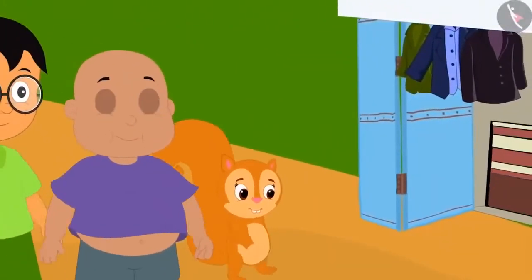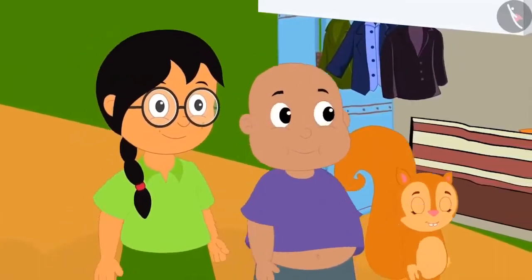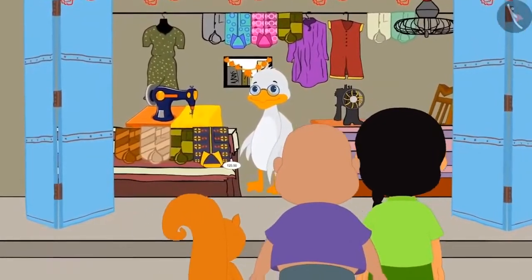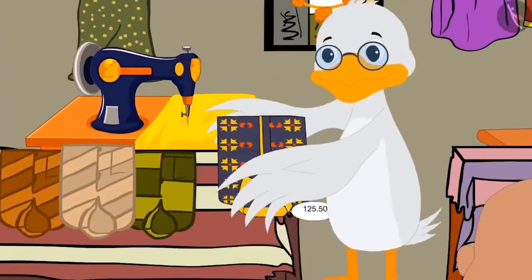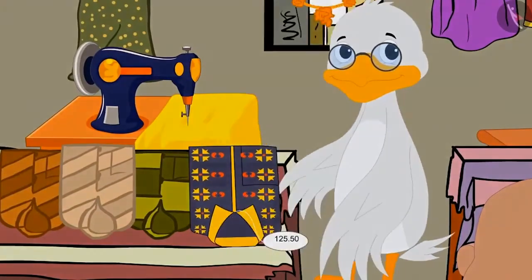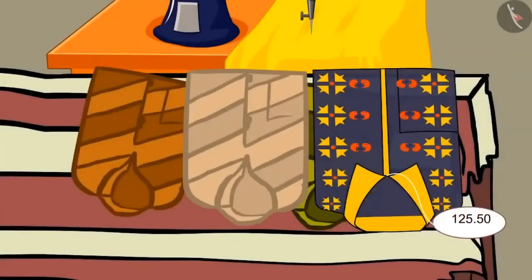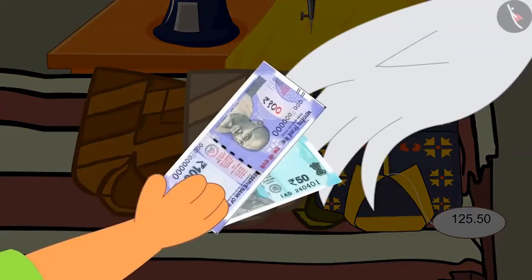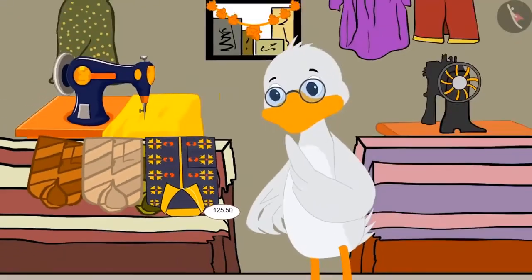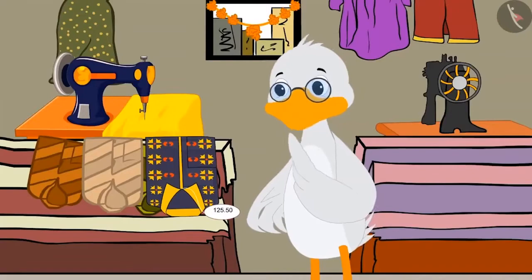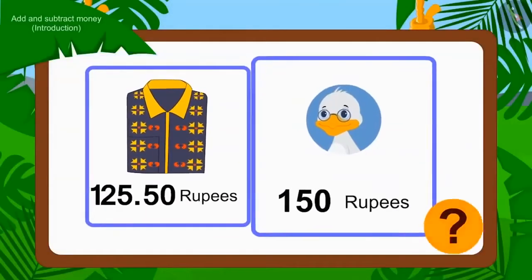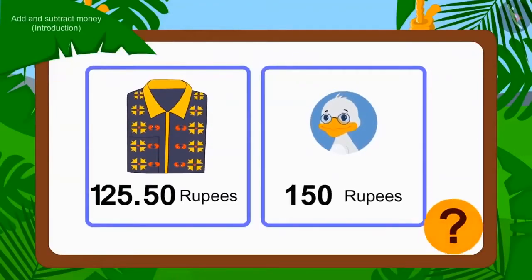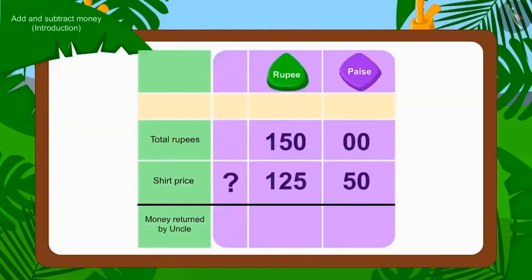Now let us see what gifts the other three are buying together. All three of them have come to Babal Uncle's shop. They are buying a new shirt as a gift for Golu. The price of the shirt is Rs. 125.50 paise. He gave Rs. 150 to Babal Uncle. Can you tell how much money Uncle will have to return to them?